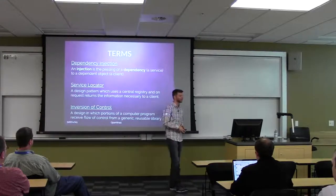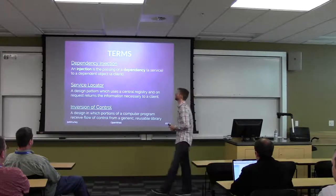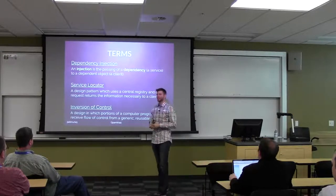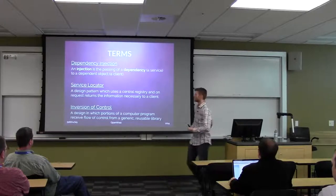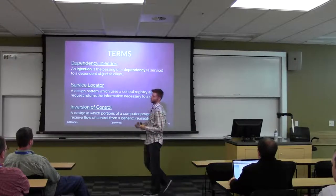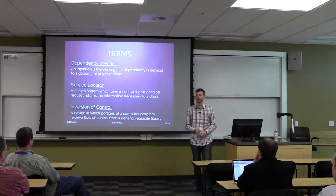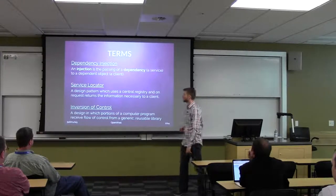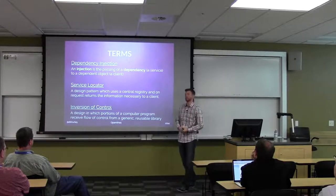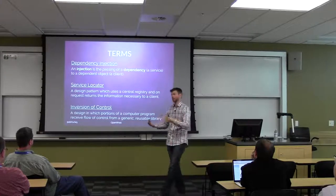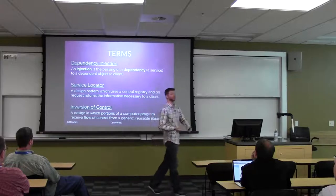To define some of the terms we're going to look at today: dependency injection is the passing of a dependency to a dependent object or client. Service locator — both of these are design patterns. A design pattern for service location is when you have a centralized registry and you're making calls to that from within a particular function or client. Inversion of control is the overarching premise of how both service locators and dependency injection actually function in how they retrieve that information.